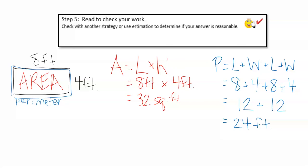For area, I can think of 10 × 4 because 10 is close to 8. Ten times four is 40, which is close to my answer of 32 square feet, so that is reasonable. To check the perimeter, I'm going to use a different formula: P = 2 × length + 2 × width. When I use this formula, I also get 24 feet, so that is a reasonable answer.